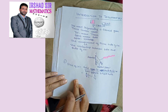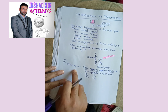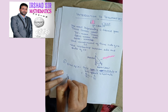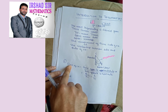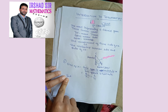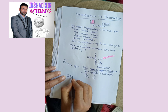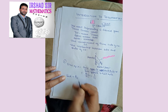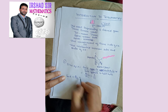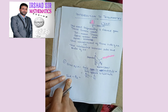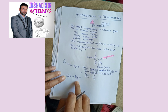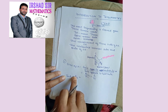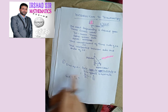So sine of angle A — its abbreviation is simply 'sin A' — is equal to perpendicular by hypotenuse. You will remember this: sin A equals perpendicular by hypotenuse.